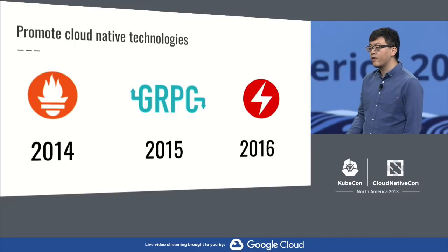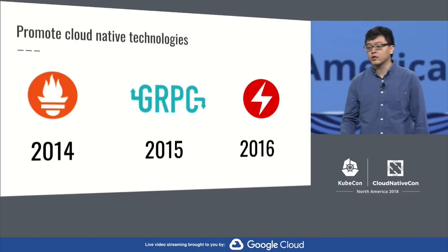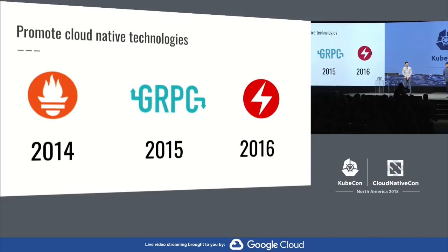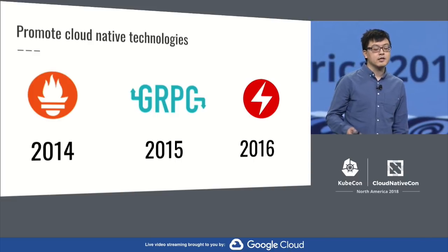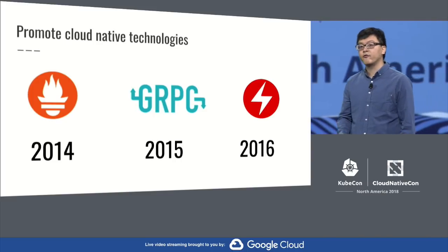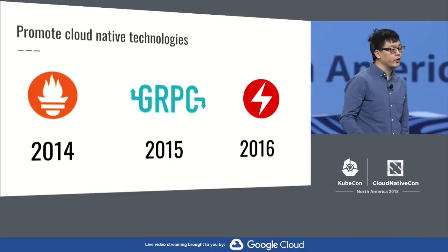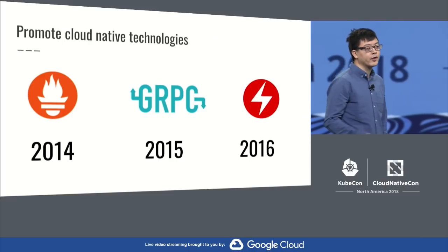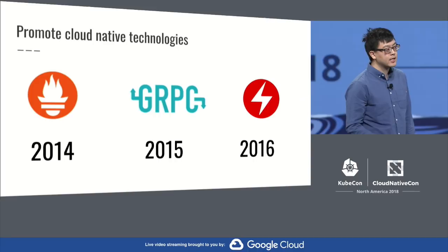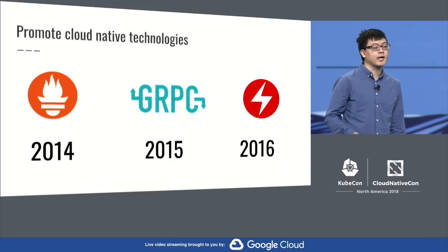The etcd community has been a very active adopter and promoter of cloud-native technologies. In 2014, we started to use Prometheus for metrics. In 2015, we moved our API to gRPC, and we have contributed many bug fixes and feature enhancements to the gRPC community. In 2016, the etcd team created the first operator, etcd operator, and we started to promote the concept of operator. Now operator has become one of the most popular ways to extend Kubernetes and to build Kubernetes-native applications.